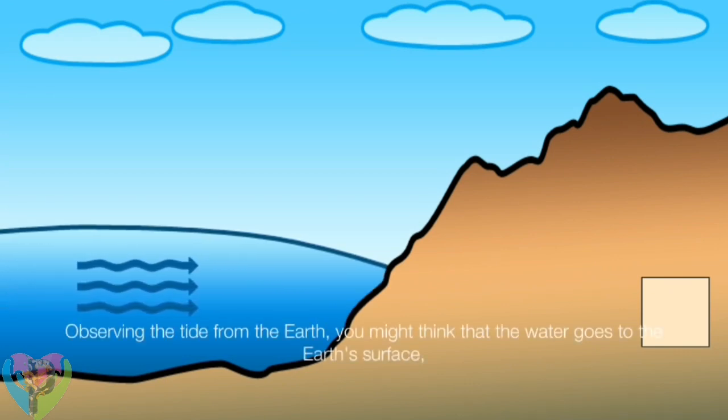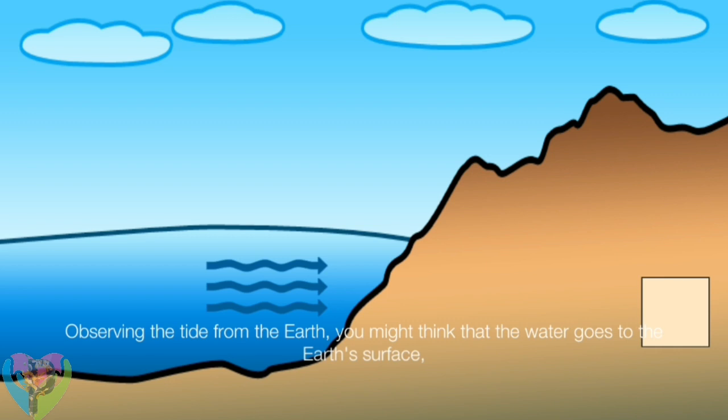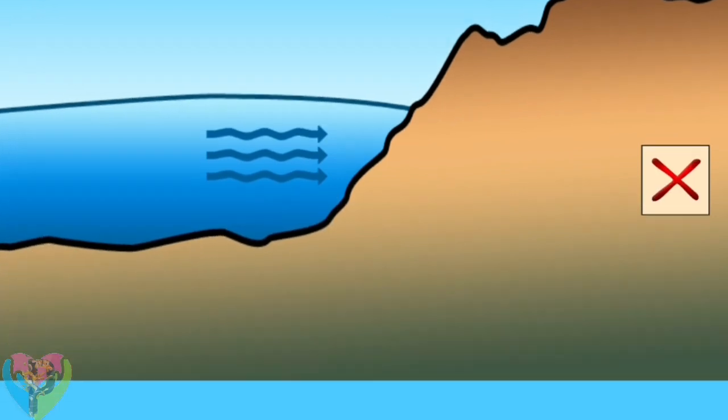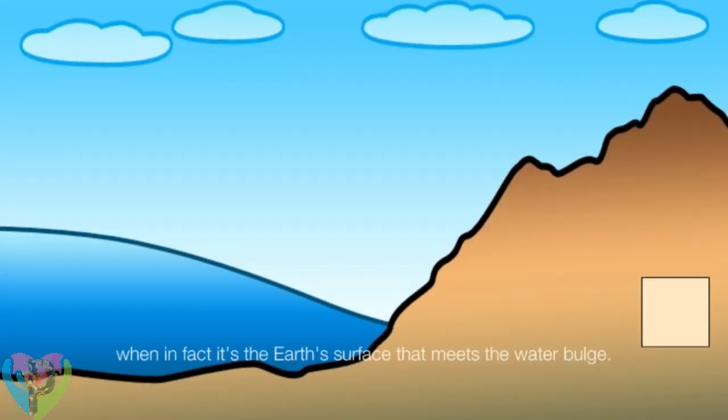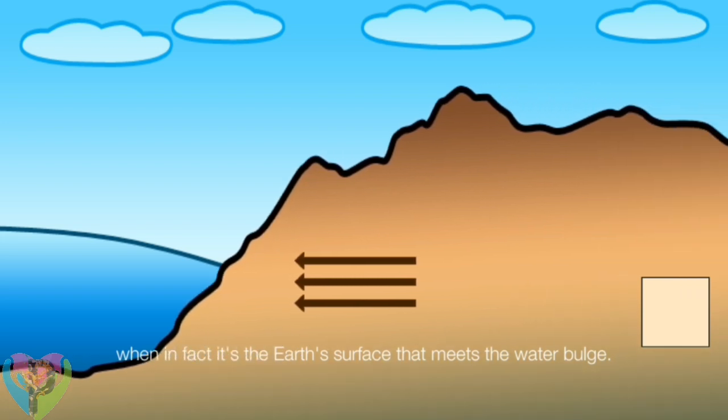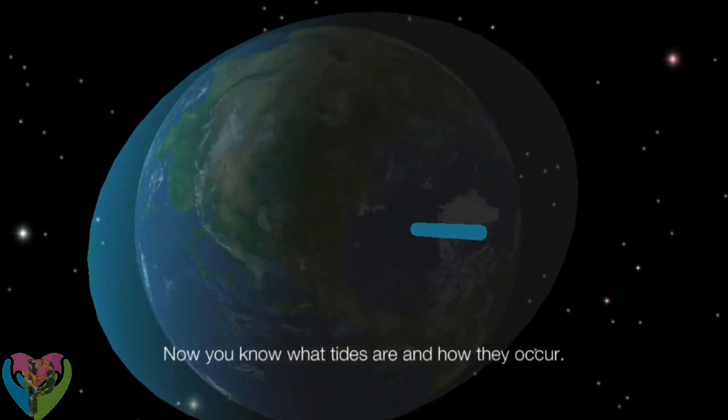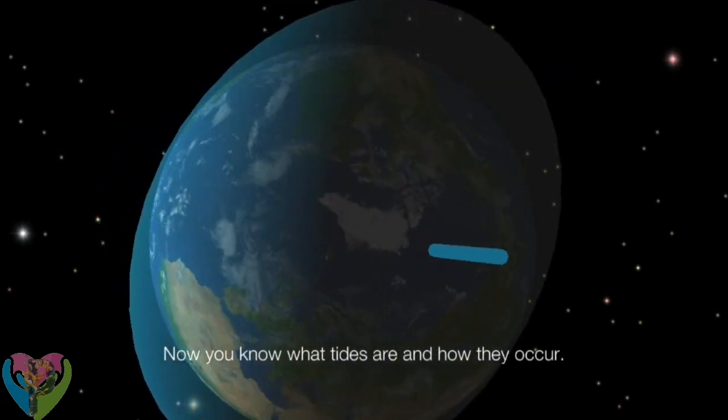Observing the tide from the Earth, you might think that the water goes to the Earth's surface. When in fact, it's the Earth's surface that meets the water bulge. Now you know what tides are and how they occur.